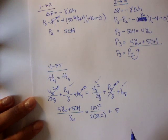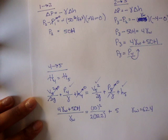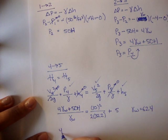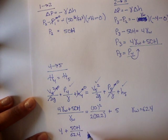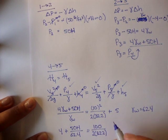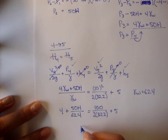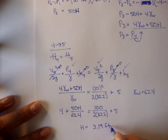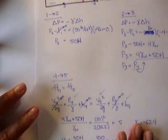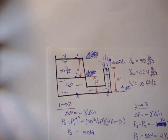Doing the math and plugging that into our calculator, we get h is approximately 3.19 feet. That's our answer for h — how high this unknown liquid is.